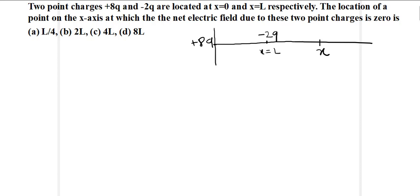The net electric field at point x is for the 8q charge at x equal to 0, this is 8q divided by 4 pi epsilon naught x square. This must be equal to the field due to the 2q charge, 2q divided by 4 pi epsilon naught x minus L square. 4 pi epsilon naught cancels, q cancels to 4.